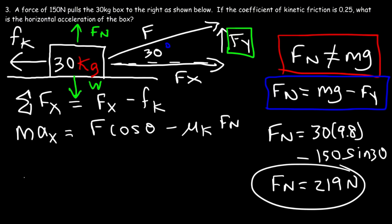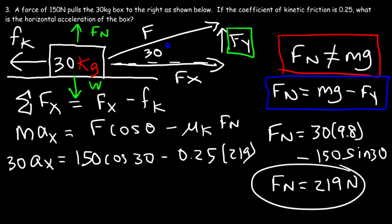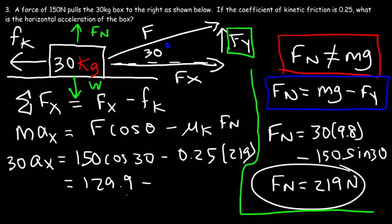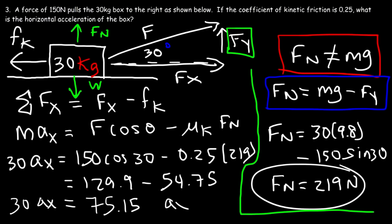Now using fn = 219 N to find the horizontal acceleration: 30a = 150 cos 30° − 0.25 × 219 = 129.9 − 54.75 = 75.15. So the acceleration is 75.15 ÷ 30 = 2.505 m/s².